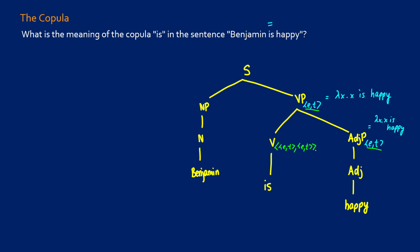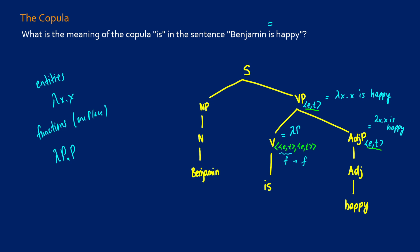When you're taking a look at this, it just looks like an absolute disaster. But when we think about 'is' and these types, what we're really doing is taking a function to another function. When we have entities, we write lambda x dot x. If we have functions or propositions, we can write lambda p dot p, and this just stands for a proposition. So in the case of 'is', its meaning is going to be lambda p dot p.